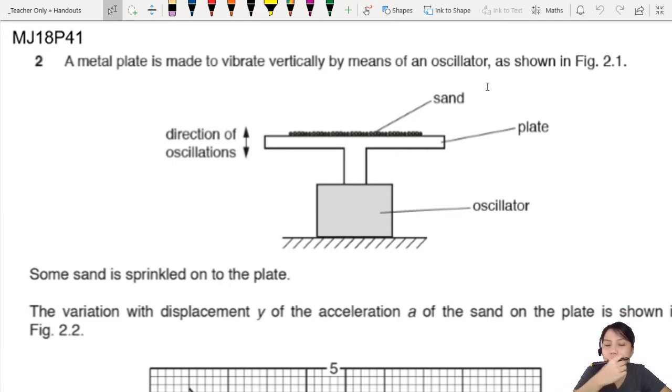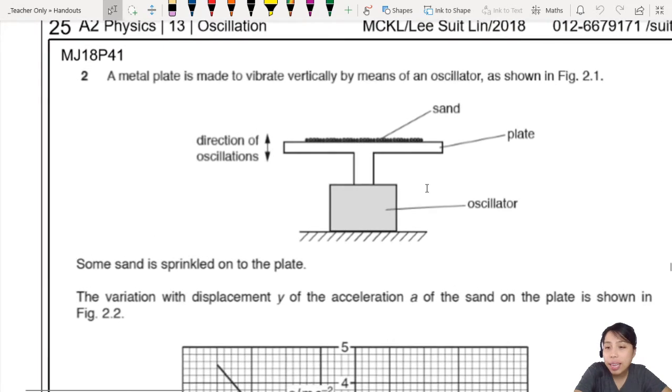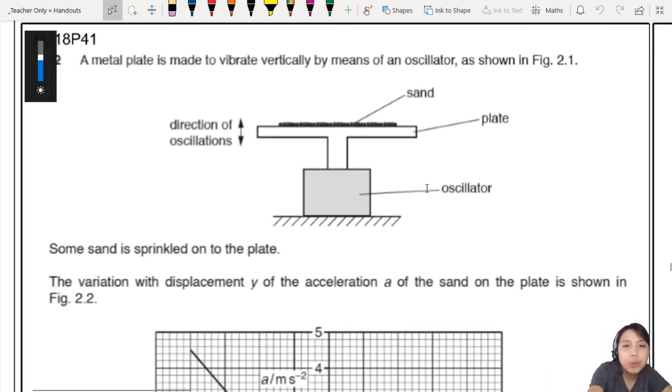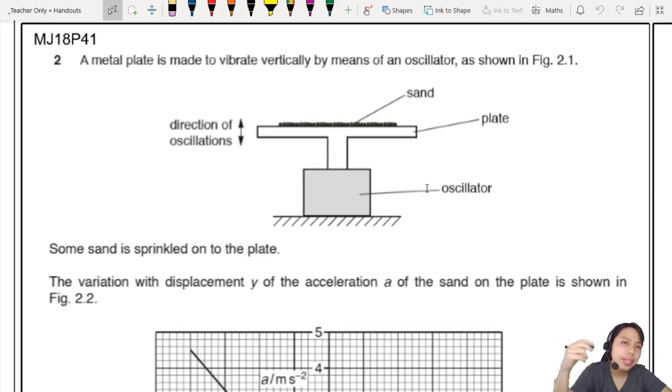Some sand is sprinkled on the plate. The variation and acceleration of the sand is shown in the figure below. So the sand will be oscillating up and down. Now before we actually go into the question, I want you to think about this. What are the forces acting on the sand? It's an oscillation, simple harmonic motion. So you need to have a restoring force, right?